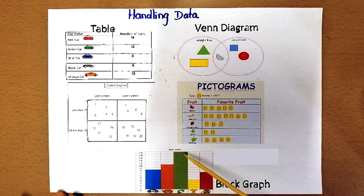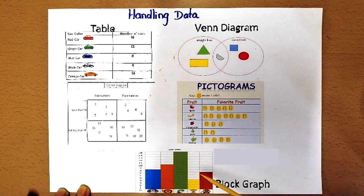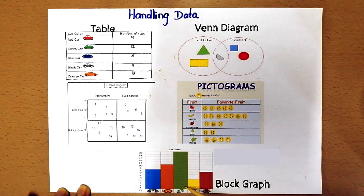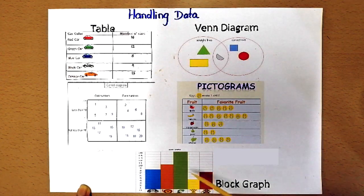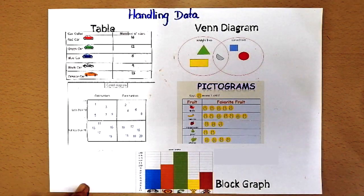By looking at the height of the bar you can easily see which data has the highest value and which one has the lowest value. You can compare the data very easily.